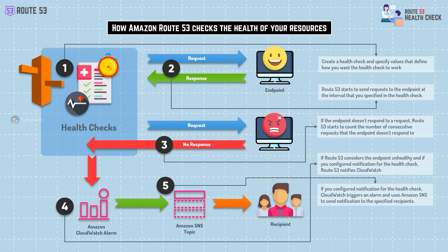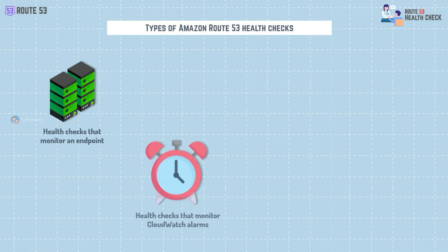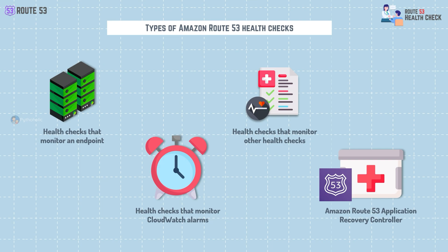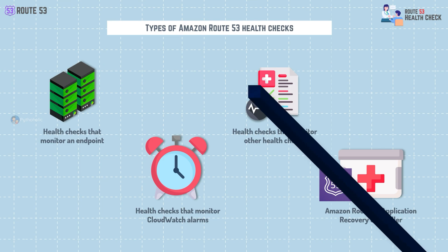Let's talk about the types of health checks available in Amazon Route 53. The first type is a health check that monitors an endpoint. The second is a health check that monitors CloudWatch alarms. The third is a health check that monitors other health checks. And the last one is Amazon Route 53 Application Recovery Control.